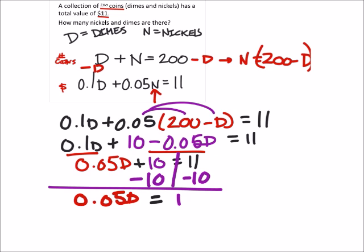That's interesting. So to solve this one, I'm going to divide both sides by 0.05. What the heck is that? The number of dimes is, is it 20? 20 dimes.